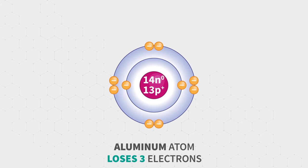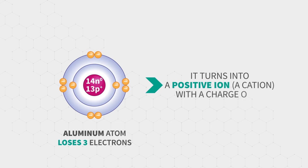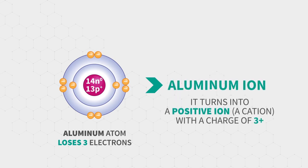When the aluminum atom loses three electrons, it turns into a positive ion, a cation, with a charge of three plus. It is called aluminum ion and it is written as Al3 plus.